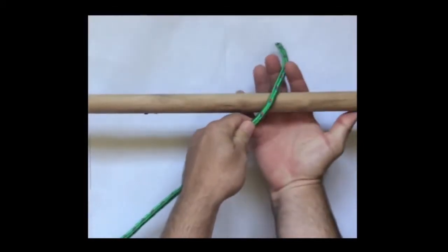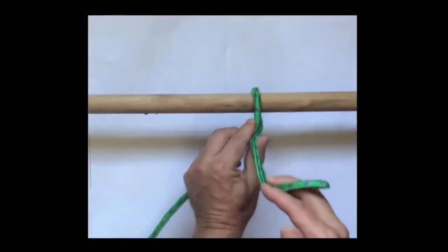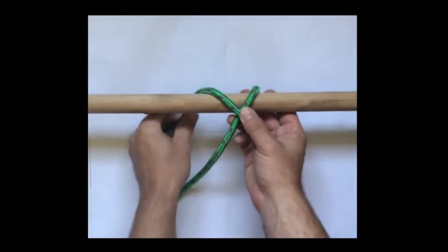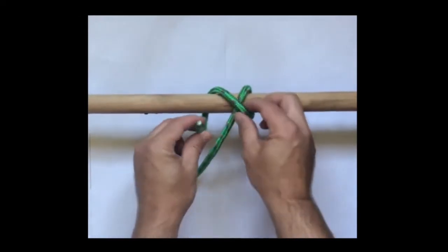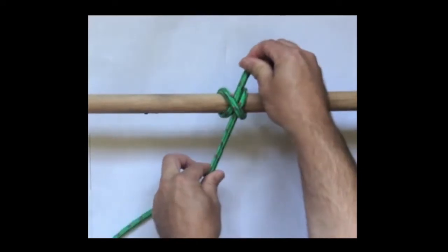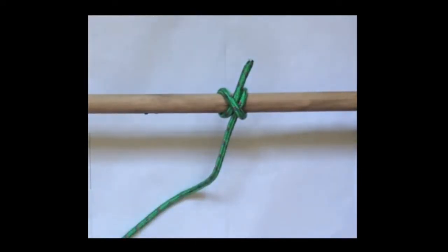The rope travels over the spar, comes up on the right hand side, crosses to the left, tucks underneath and tucks back through. So you end up with two parallel ropes with a crossbar.